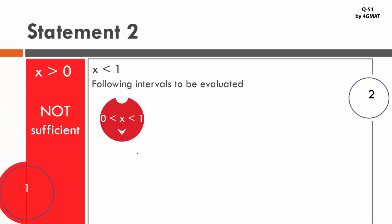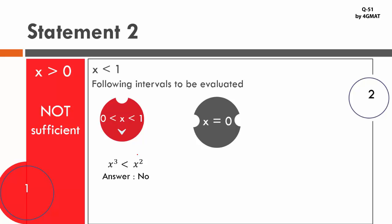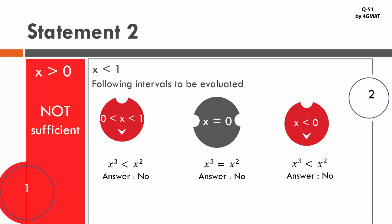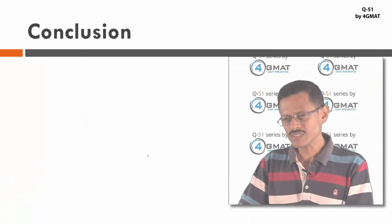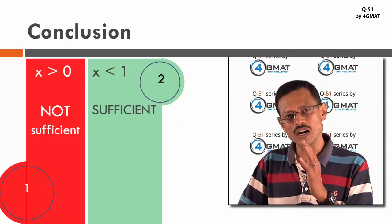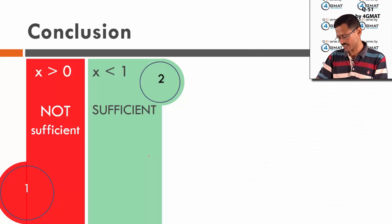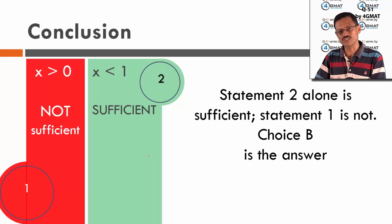To summarize: for x < 1, every interval — (0,1), x = 0, and all negative values — gives a definite no. There are no other intervals to evaluate. Statement 2 gives a conclusive, definite answer. Statement 1 is not sufficient; Statement 2 alone is sufficient. Therefore the answer to this question is B.